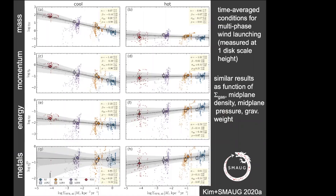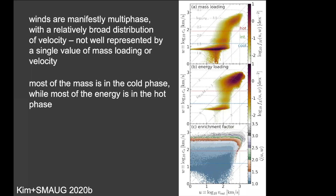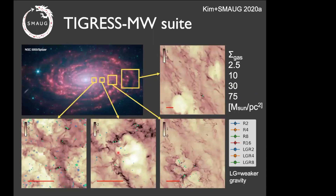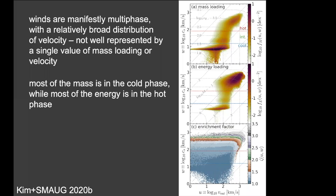Audience question: When the TIGRESS boxes were selected, is the selection only in radius, or is azimuthal dependence important? Rachel responds: There are approximately five parameters that determine conditions in these boxes — not just gas surface density, but also shear, total density, and others — all chosen to match Milky Way conditions. The details are provided in the paper.